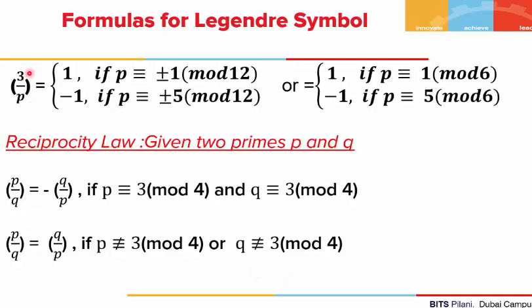For the case where a is 3: (3/p) = 1 if p ≡ ±1 (mod 12), and (3/p) = −1 if p ≡ ±5 (mod 12). We can use either property to determine the value.